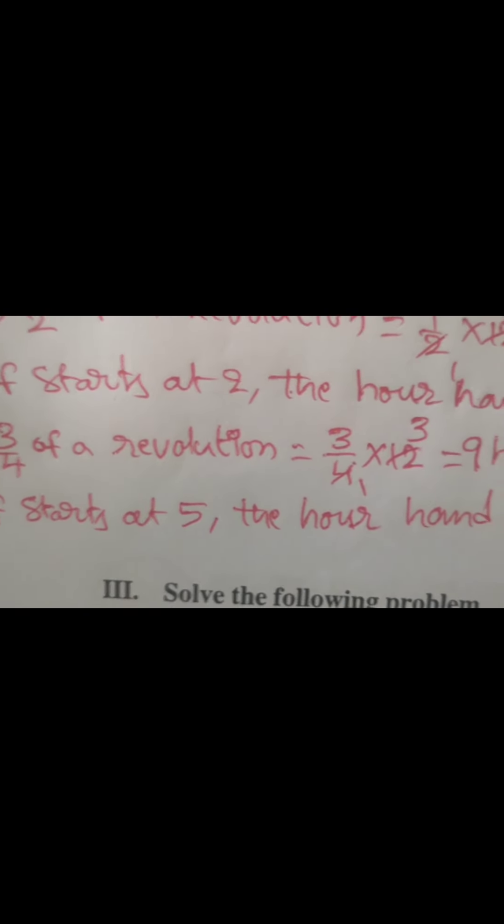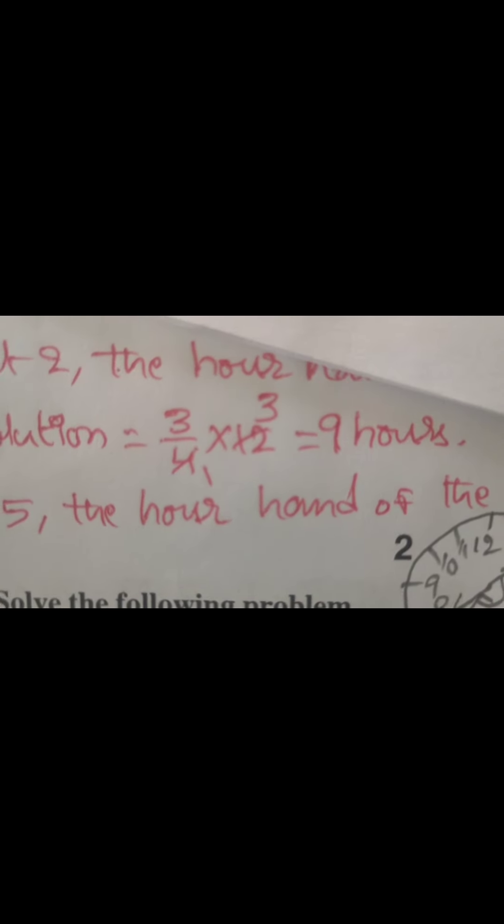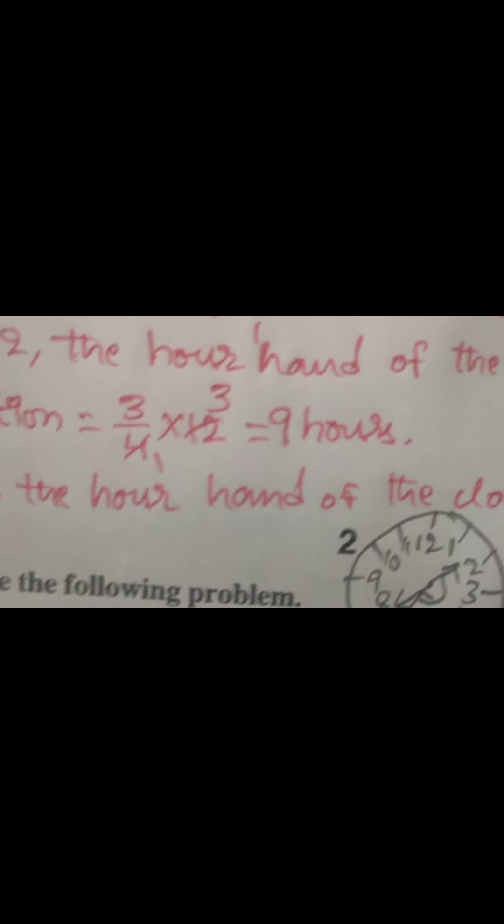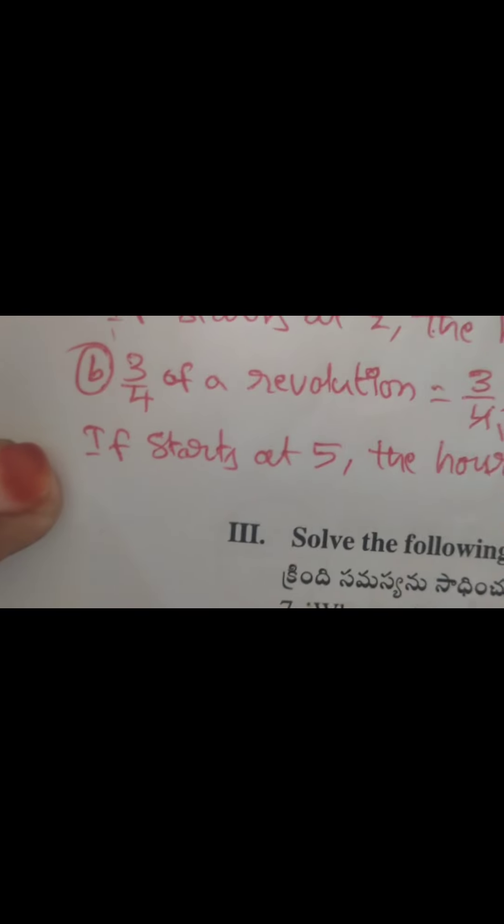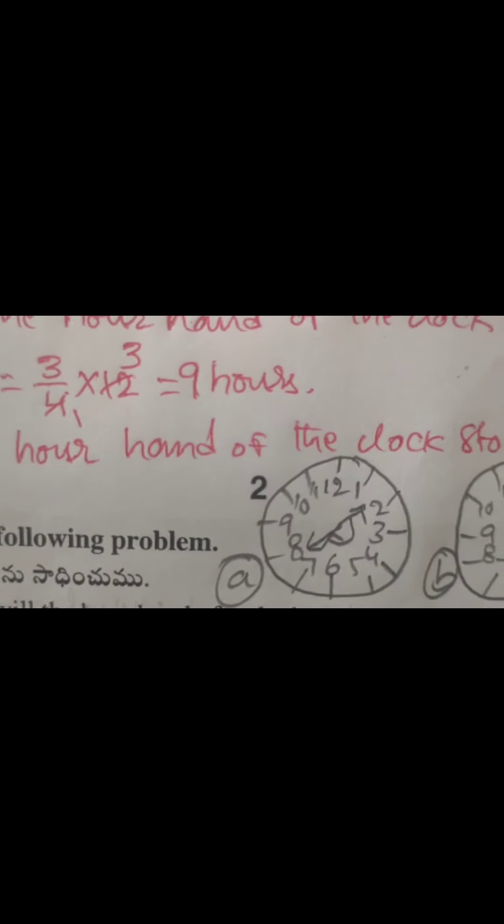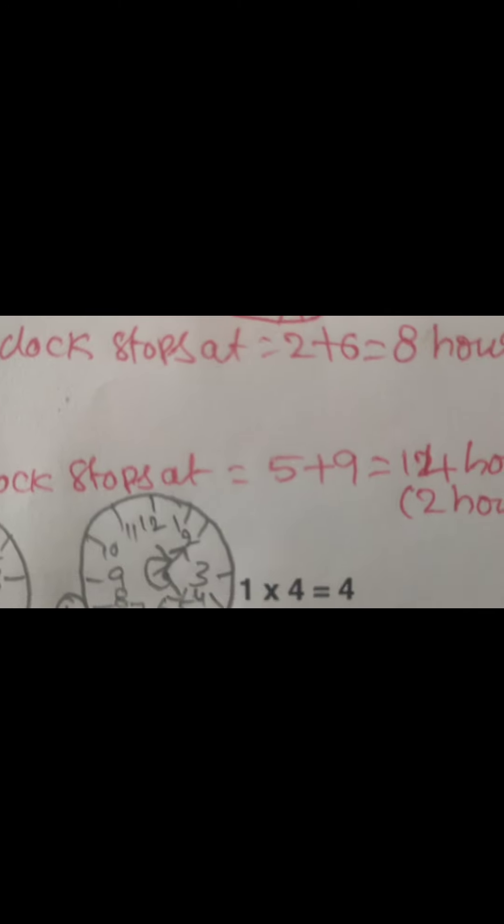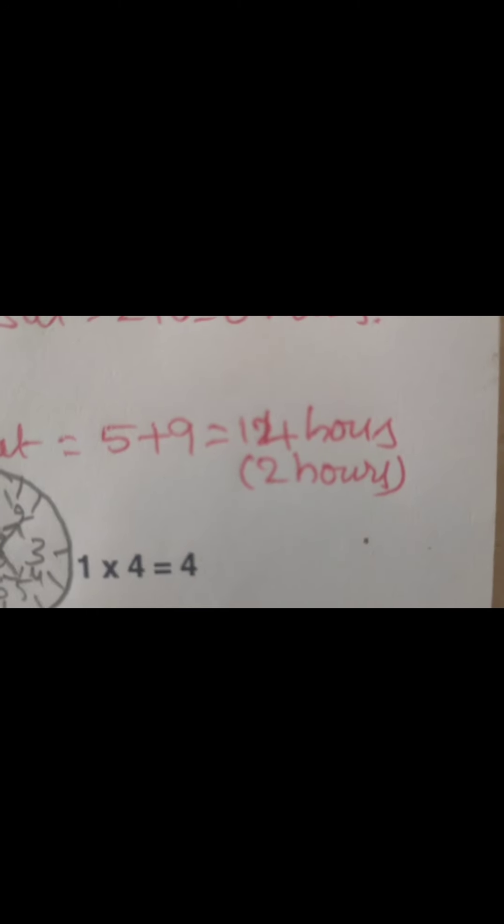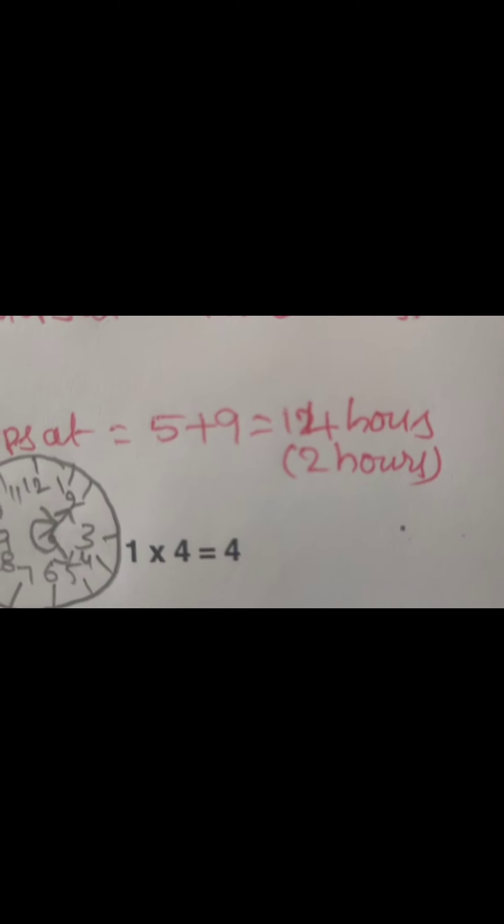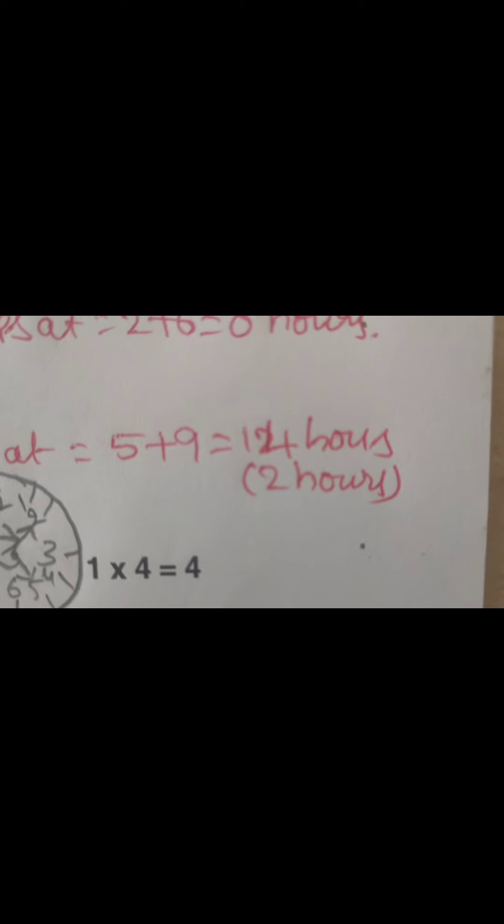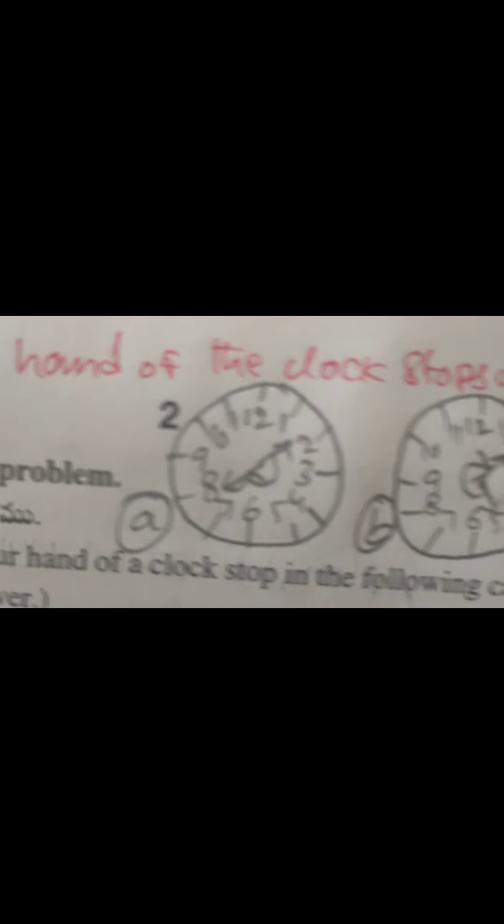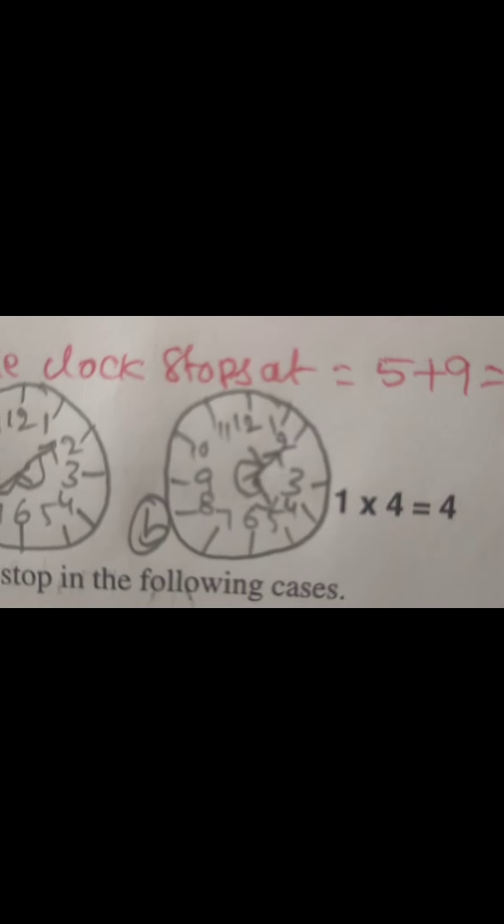Problem B: start at five and makes three by four of a revolution clockwise. Three by four of a revolution means three by four into twelve hours. So four one, four three. So three into three, nine hours. So the hand have to move nine hours. If start at five, the hour hand of the clock stops at five plus nine hours. So fourteen hours. Fourteen hours also called as two hours. So the hour hand stop at two hours. This first figure represented the solution of sub-problem A. Second figure represents the solution of sub-problem B.